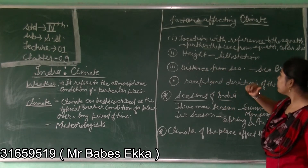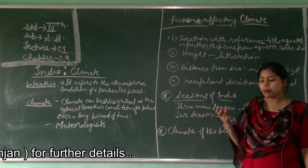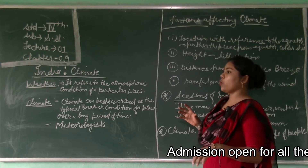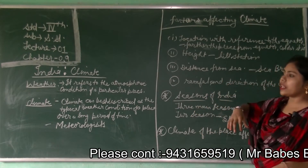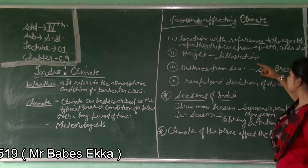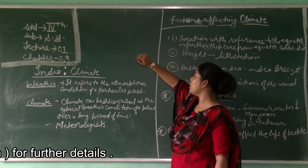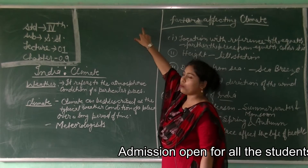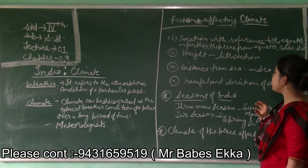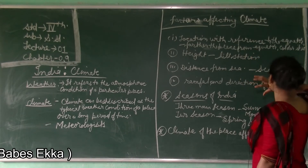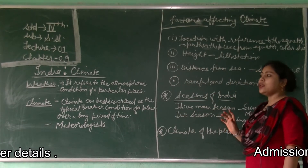First, we will see how the equator affects our climate. The equator lies in between and divides the earth into two halves. The sun rays fall on the equator directly, so the area near the equator is very hot. As you go from the equator toward the poles, the temperature decreases. That is why places further from the equator experience colder conditions. In India, the equator lies closer to the southern states, which is why the northern plains are colder than the southern region.